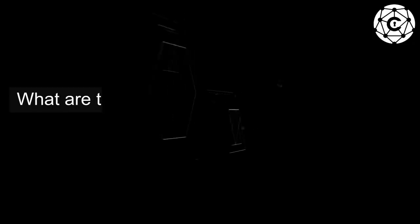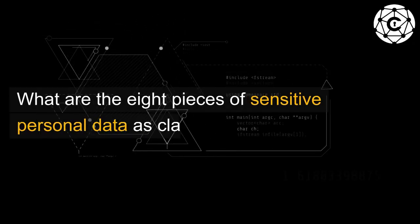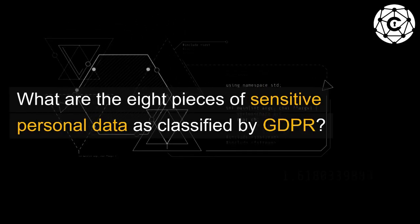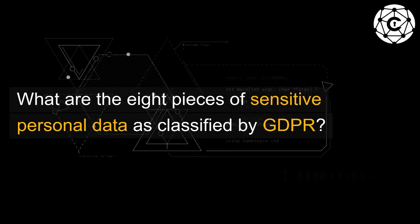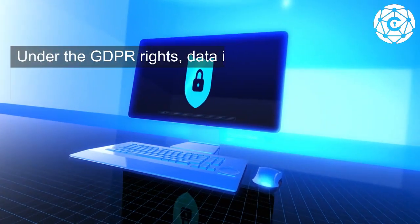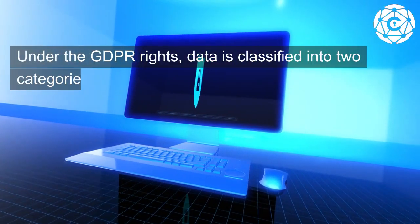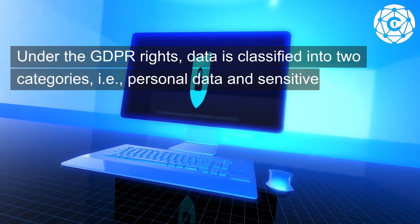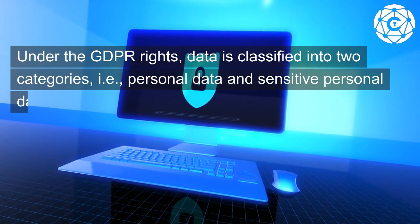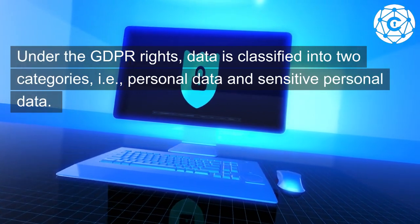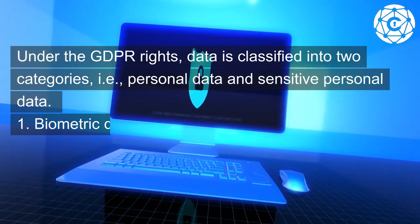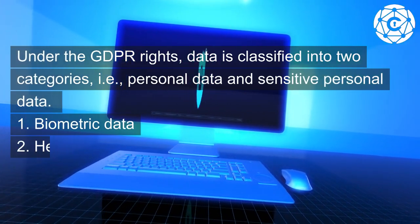What are the eight pieces of sensitive personal data as classified by GDPR? Under the GDPR rights, data is classified into two categories: personal data and sensitive personal data.